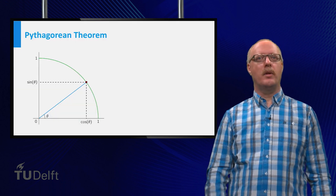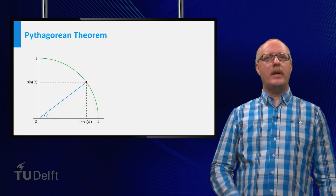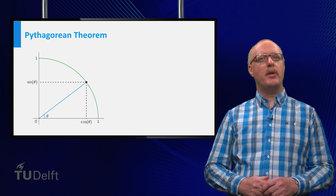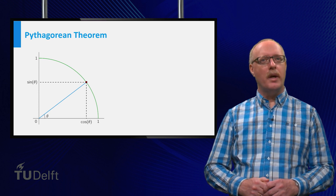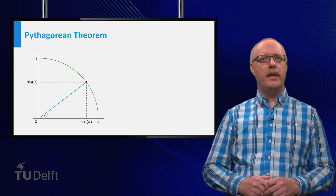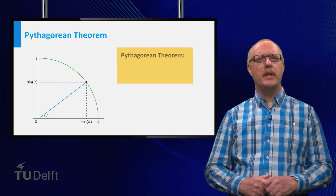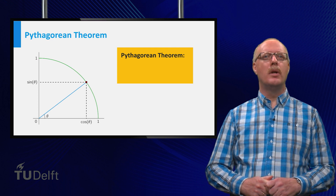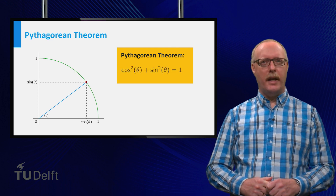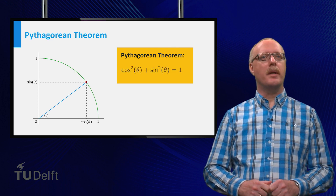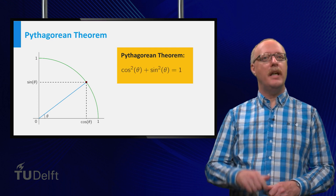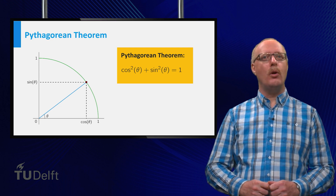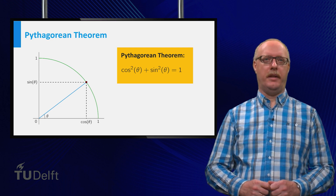For instance, look at the rectangular triangle with hypotenuse equal to 1. Then the Pythagorean theorem leads to cosine squared plus sine squared equals 1. In fact, this holds for all real theta.